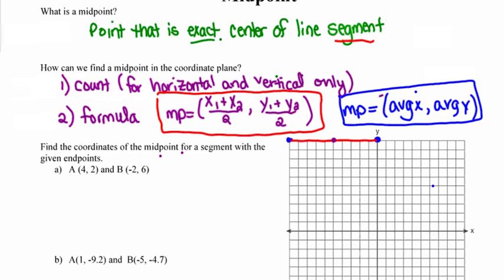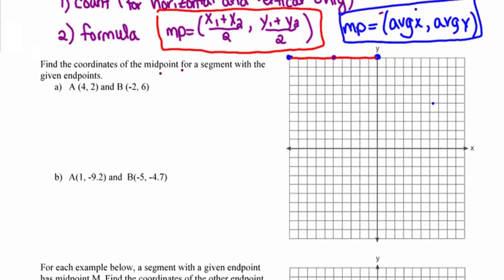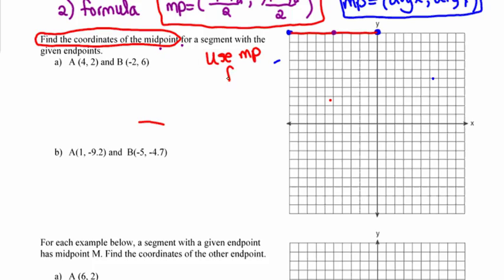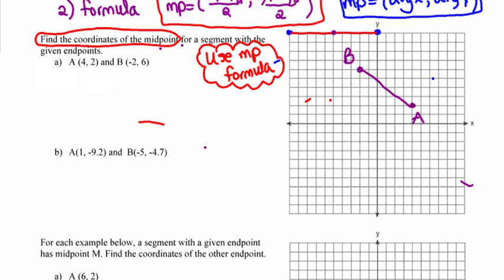Let's take a look at how we might use this to solve some problems. This first example says find the coordinates of the midpoint for a segment with the given endpoints. When we're trying to find the midpoint, we always use the midpoint formula — unless the segment is vertical or horizontal and we can count it. In this case, the line segment with endpoints A at (4, 2) and B at (-2, 6) is clearly not horizontal or vertical from the picture, so we're going to use the formula.